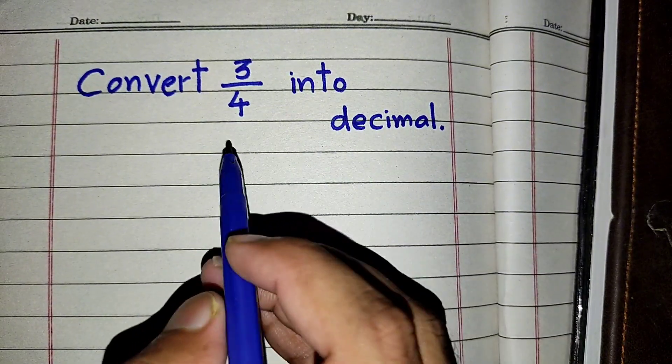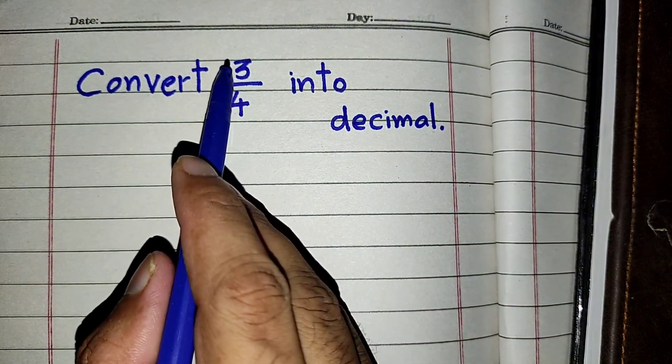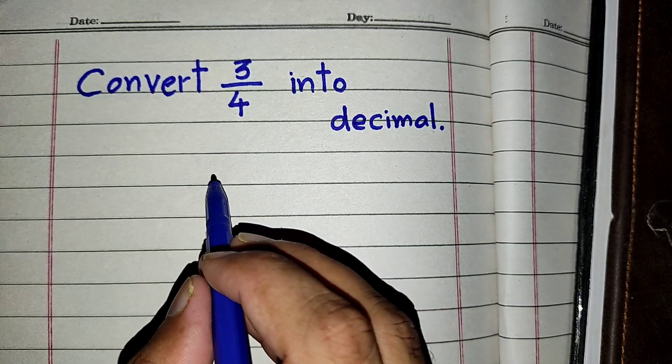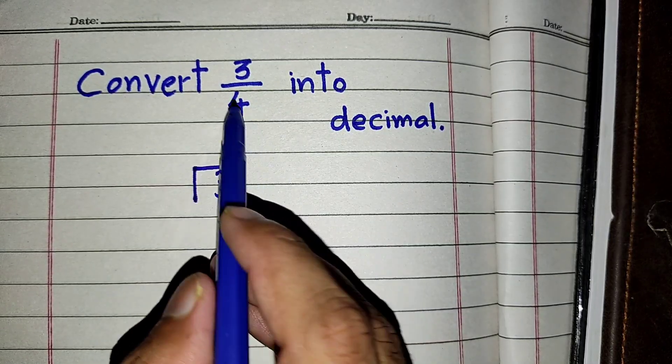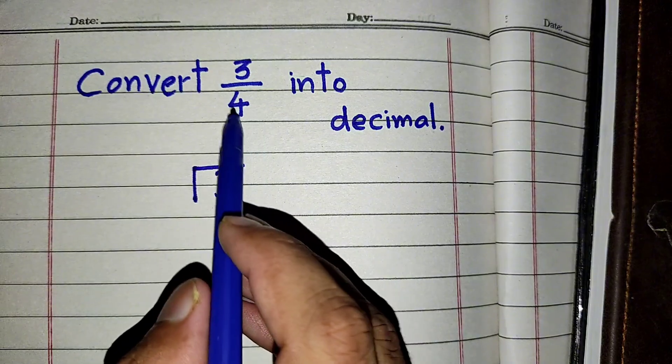First of all we have to divide it. The above number is called the numerator. We have to put this number inside the box as the dividend, and we have to write the lower number, that is 4, the denominator, outside of the box.